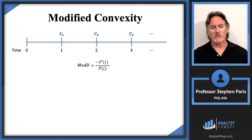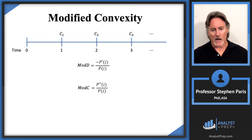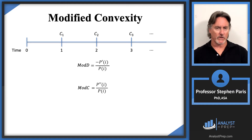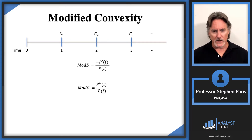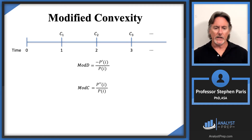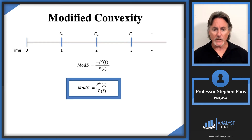The modified convexity is an extension of this idea using a second derivative. The modified convexity is defined as the ratio of the second derivative of the present value function with respect to the interest rate, divided by the present value function itself in the denominator. You don't need a negative sign because the second derivative is always going to be positive — the graph of y equals P(i) is concave up, so the second derivative is always positive. That's your definition of modified convexity.